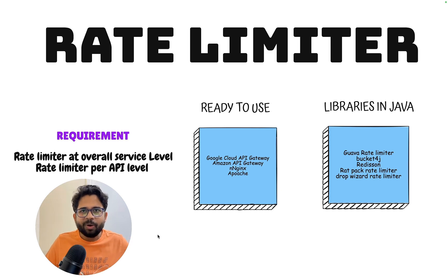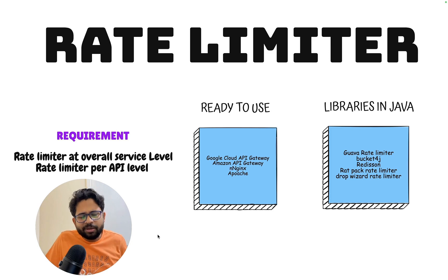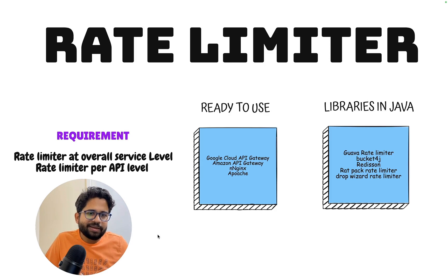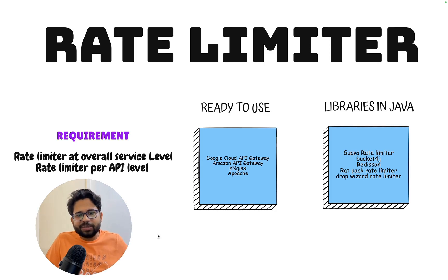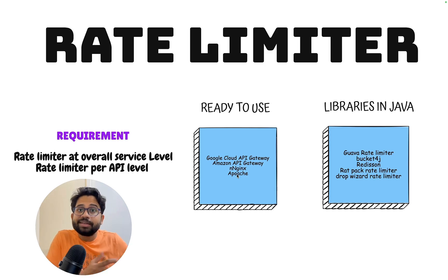There are multiple reasons you need to rate limit. You want to save yourself from the DDoS attack. You want to save your system from one bad client which could consume all your resources. The first option is to use a ready-made solution. Wherever you host your service, those services provide a rate limiter. If you have Amazon AWS, they provide a rate limiter for their own services. Likewise for Google — we have Google Cloud API gateways, Amazon API gateways, and Azure also provides an API gateway which does rate limiting. Azure Front Door also does rate limiting.